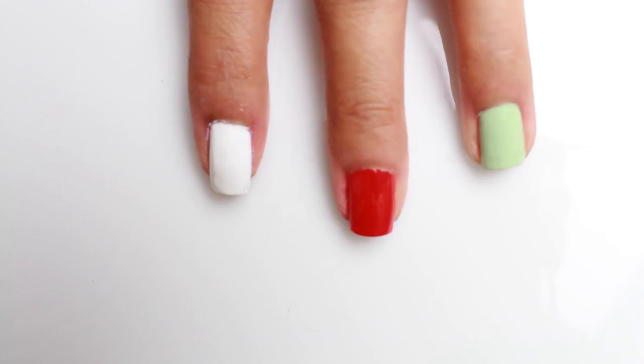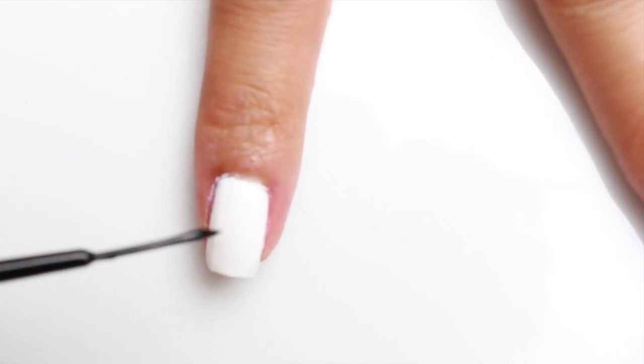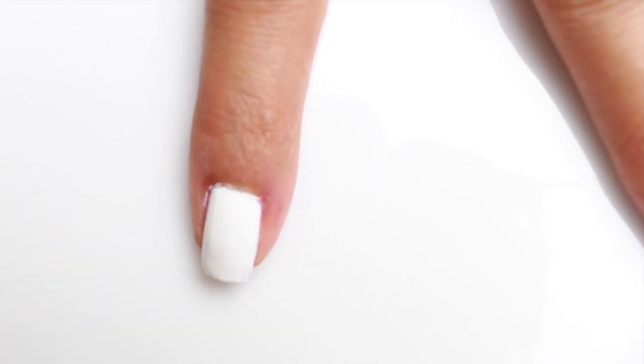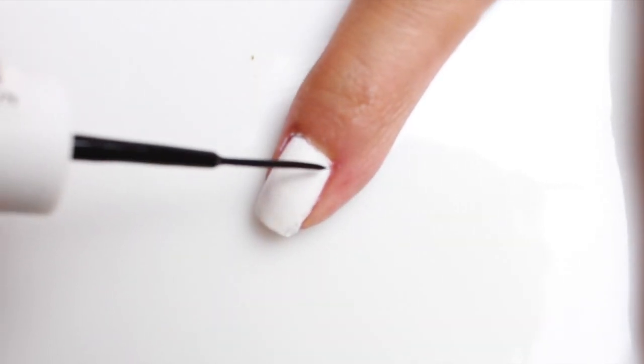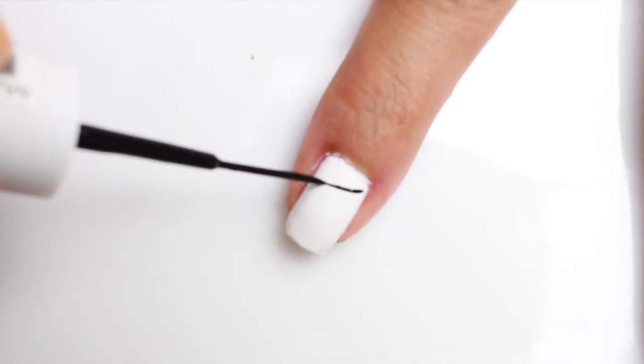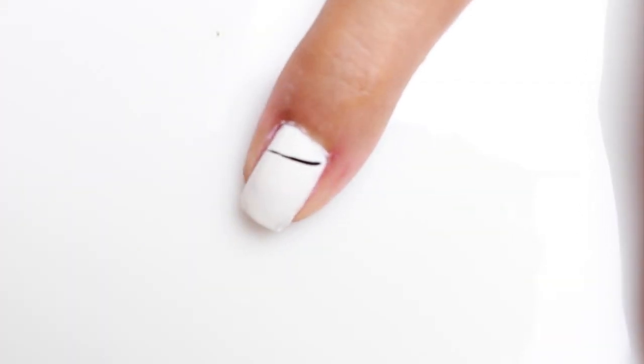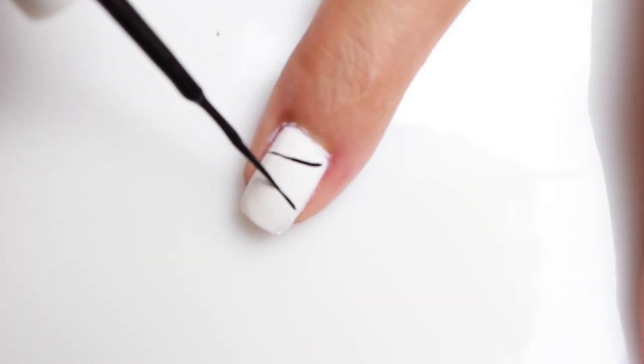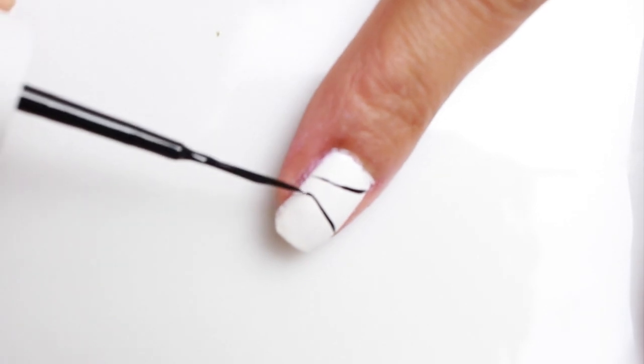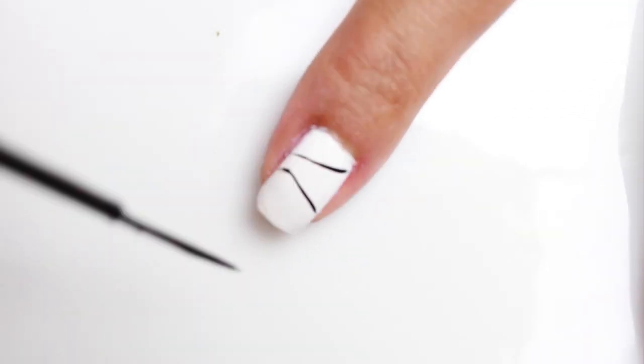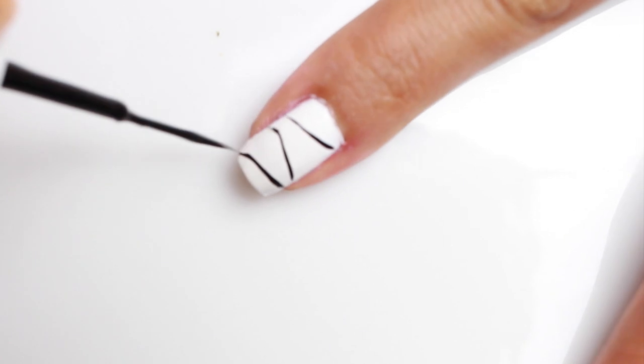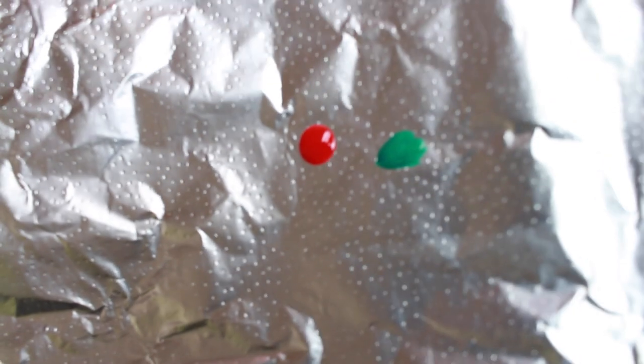Okay, now that our base colors are set, we're gonna start with our first design. These are just fun Christmas lights. Don't worry too much about the lines. Just make sure one goes down, the other one goes up, just so they're not too next to each other. And have fun. Don't worry too much.